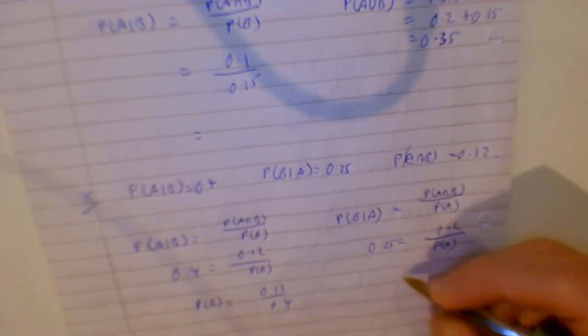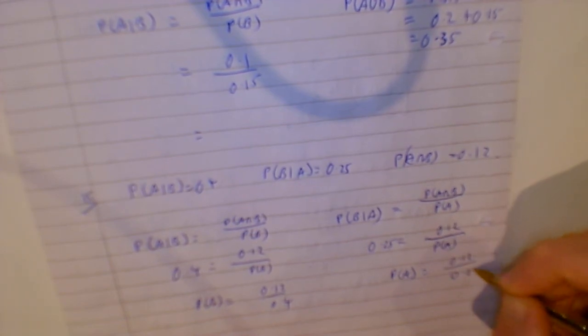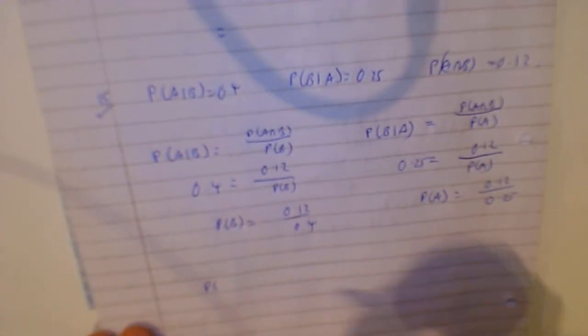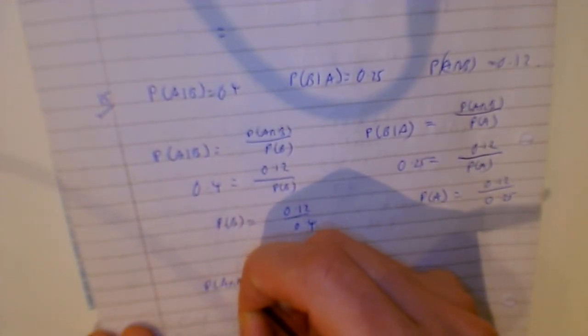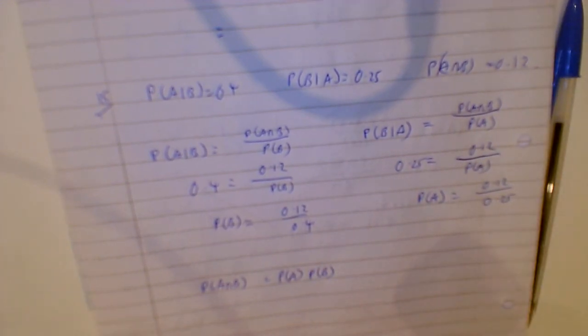Probability of A is 0.12 over 0.25. Then we check: does P(B) multiplied by P(A) equal 0.12? That would give us our answer. If P(A) times P(B) equals P(A ∩ B), it's independent; if it doesn't, it's not independent. Hopefully that helps.